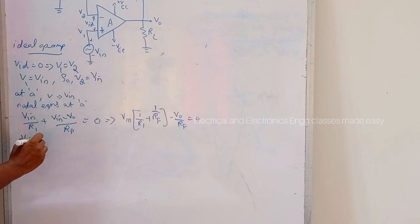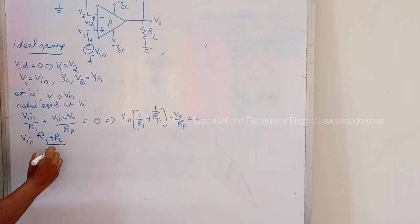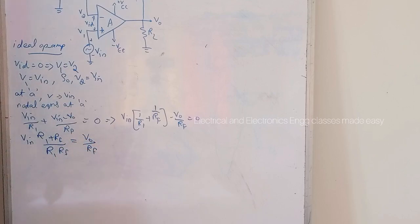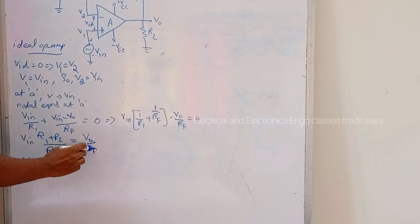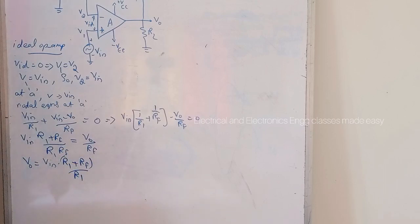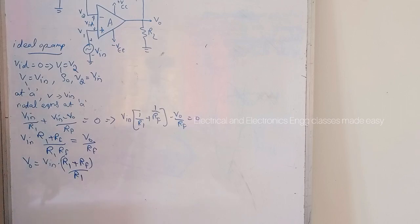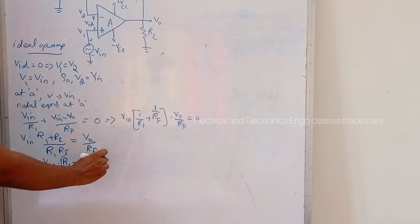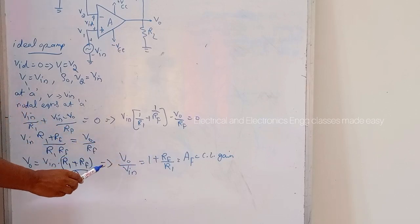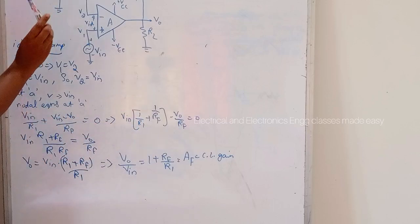Taking the LCM we get Vin into R1 plus Rf divided by R1·Rf, which equals V0 divided by Rf. Cancelling Rf, we get V0 equals Vin into R1 plus Rf divided by R1. Therefore the closed-loop gain AF equals V0 divided by Vin equals 1 plus Rf divided by R1 for the non-inverting amplifier.